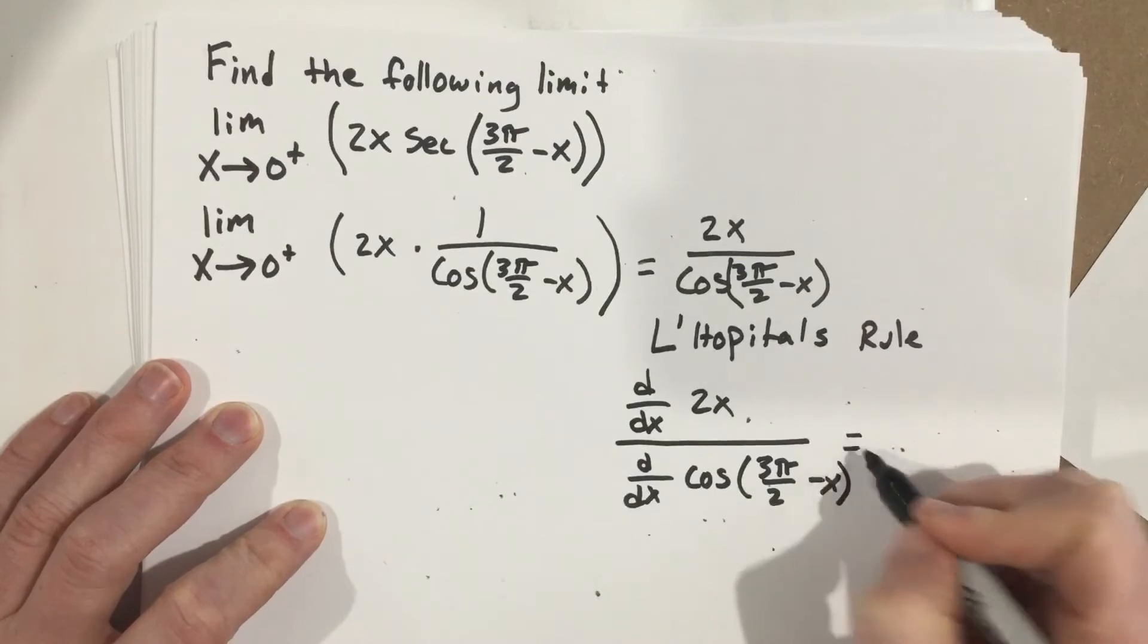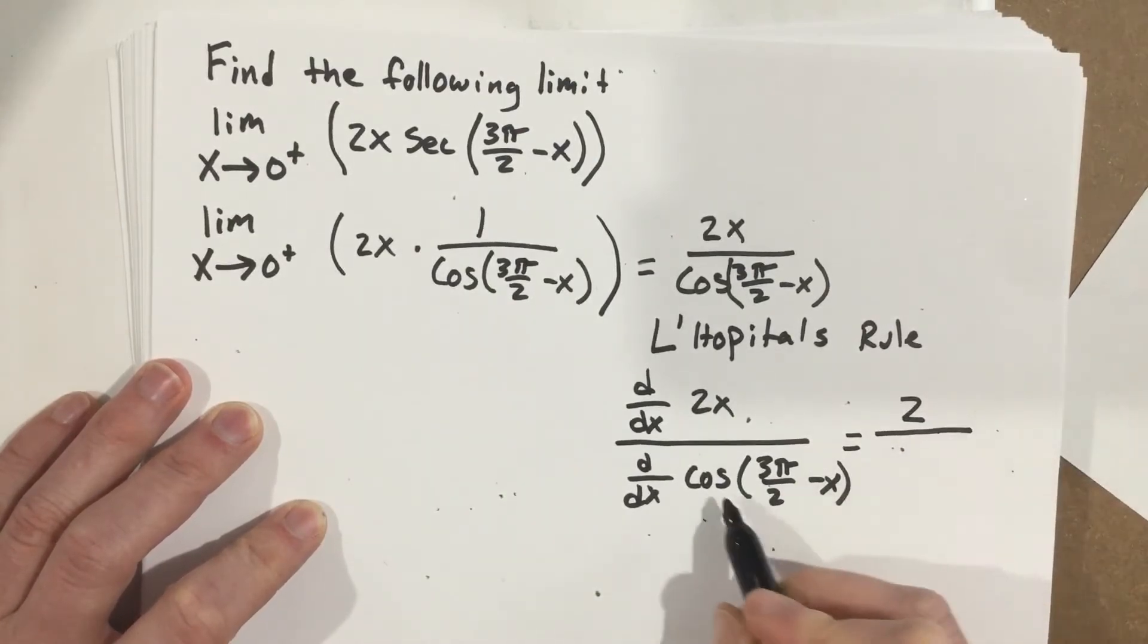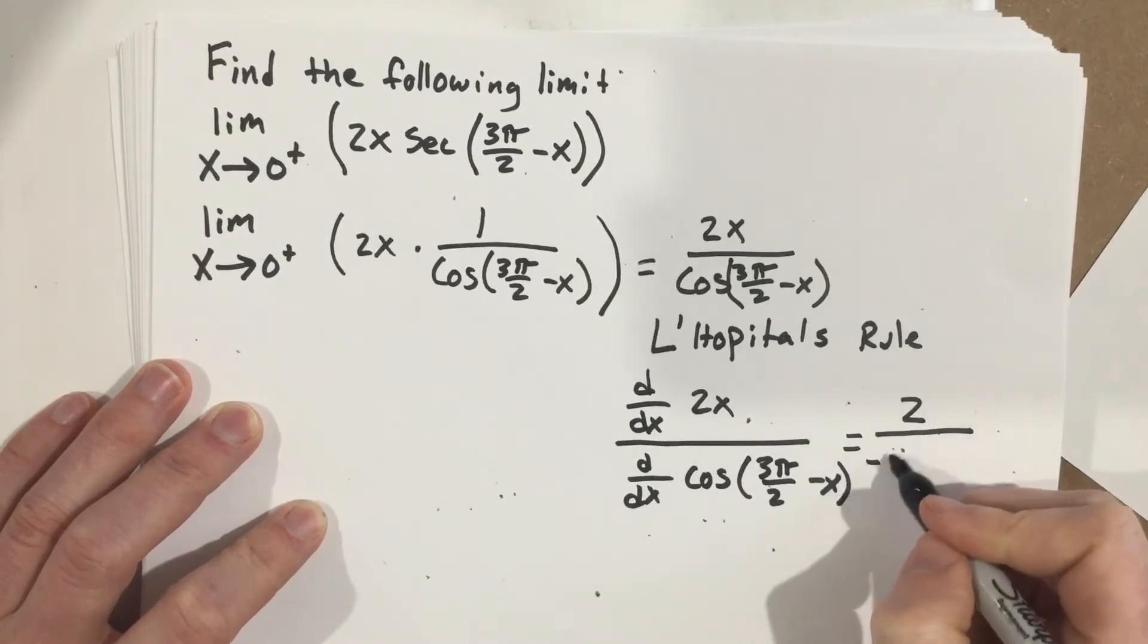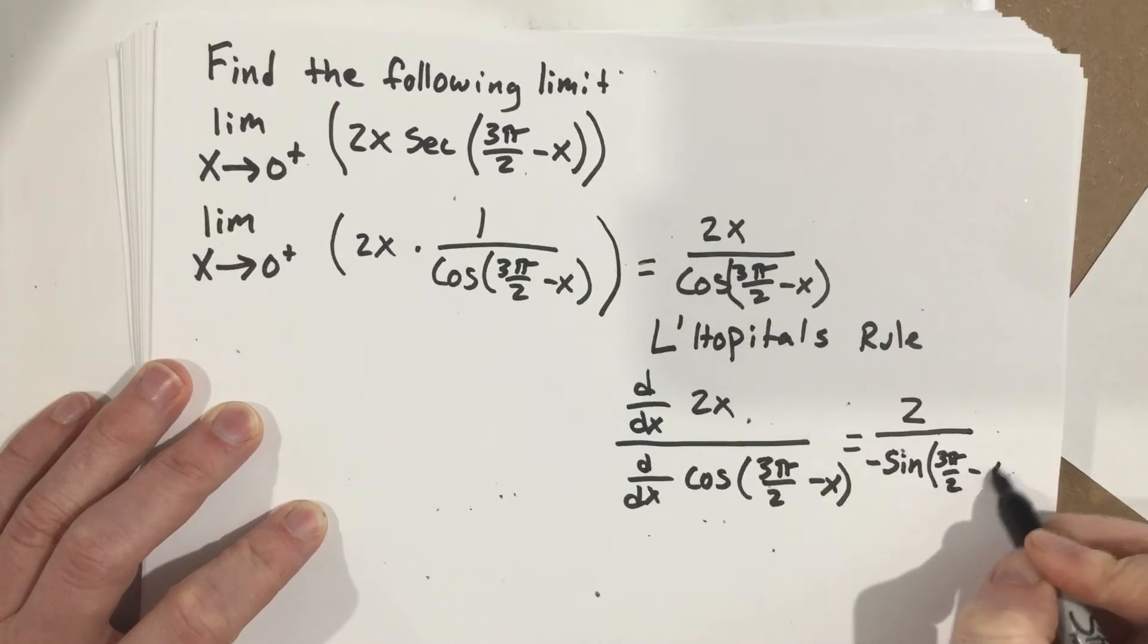I know d over dx of cosine 3π over 2 minus x. When I do the derivative of cosine, I get negative sine. So negative sine 3π over 2 minus x.